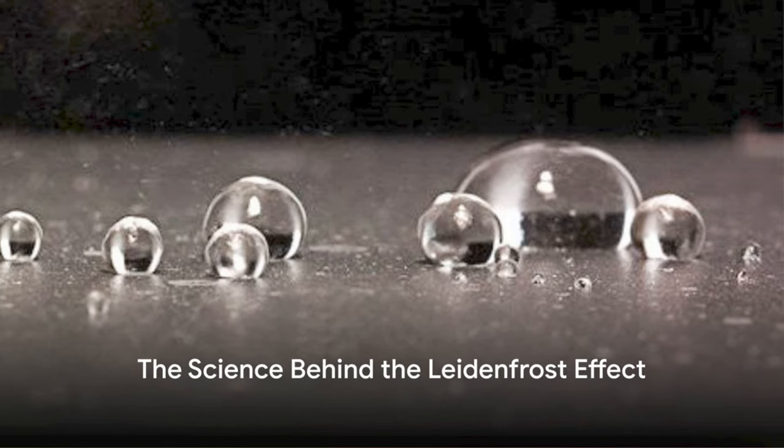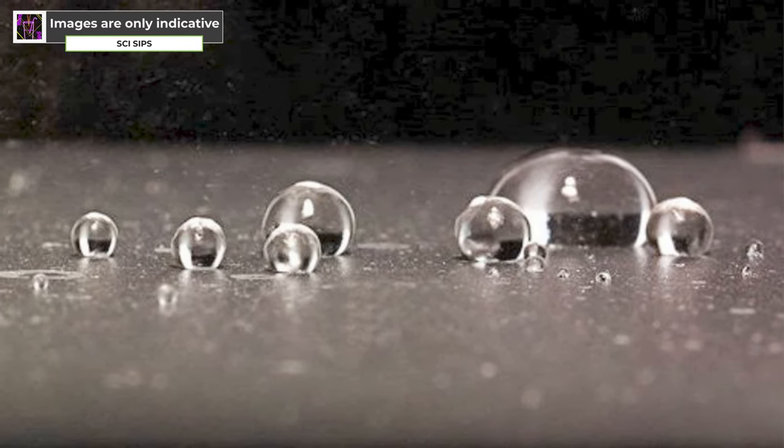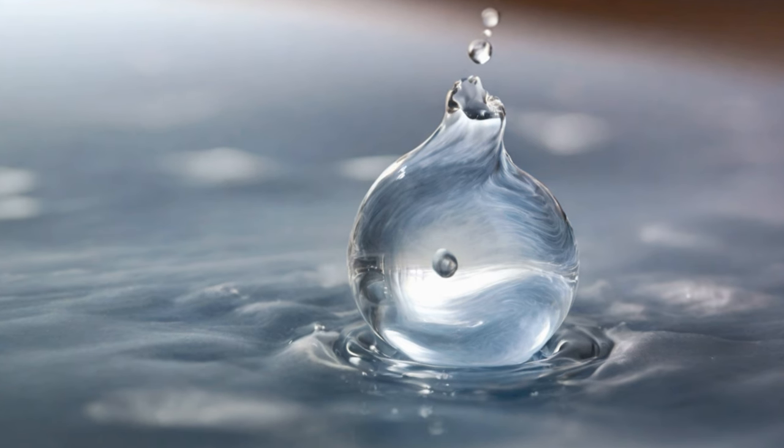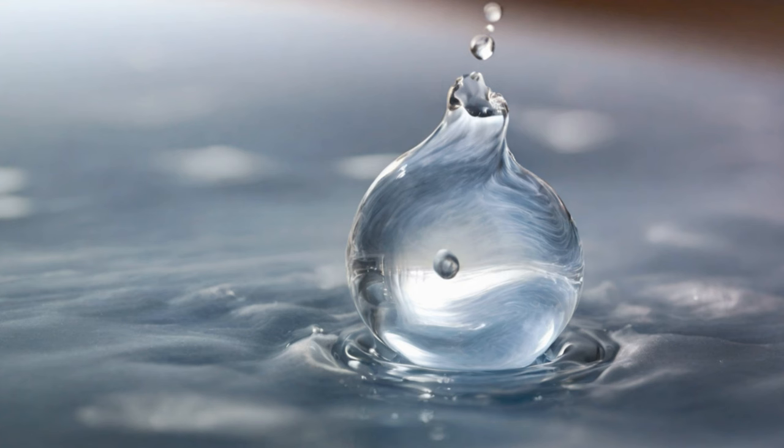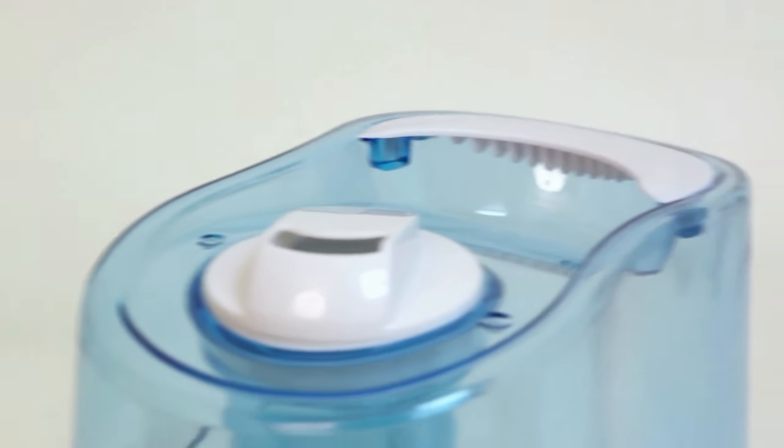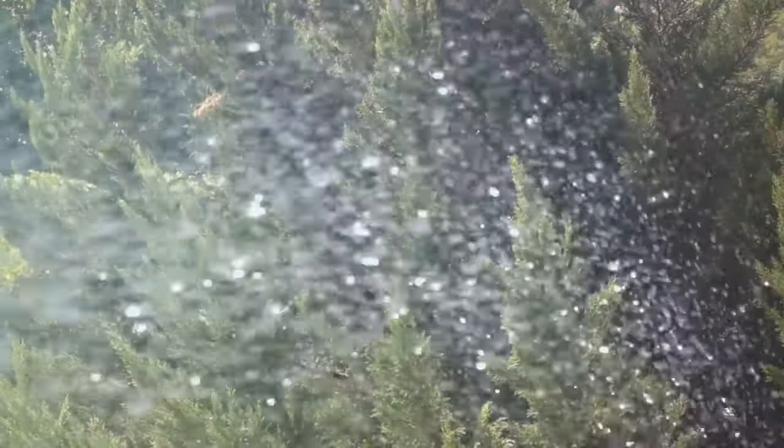To understand the Leidenfrost effect, one must delve into the realms of thermodynamics and fluid mechanics. Let's start with the basics. It all comes down to the interaction between a hot surface and a liquid droplet. When the surface is heated to a temperature significantly above the liquid's boiling point, a fascinating phenomenon occurs. The bottom layer of the liquid droplet vaporizes almost instantaneously upon contact with the heated surface. This rapid vaporization creates a protective layer of vapor that insulates the rest of the droplet from the intense heat. Now, this vapor layer isn't just a simple protective shield, it's a dynamic, constantly changing entity. The heat from the surface maintains its existence, continuously vaporizing the liquid droplet to replenish the vapor that escapes into the atmosphere. This continuous cycle of vaporization and escape forms the basis of the Leidenfrost effect.